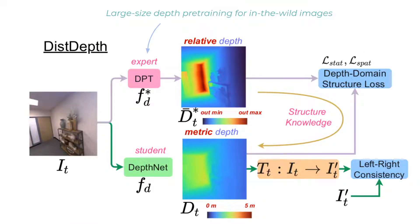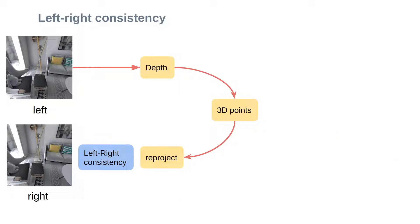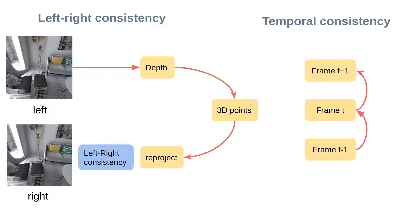The framework can be divided into two branches. The lower branch adopts a left-right consistency loss, which aims at estimating the metric depth from stereo pairs using back-projection and reprojection. It estimates depth maps from one side, back-projects depth to 3D points, then reprojects the 3D points to the other side using stereo camera parameters. Finally, a photometric consistency loss is computed, and temporal consistency is used between current frames and neighboring frames.